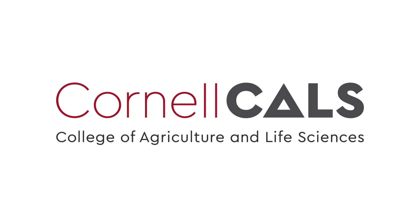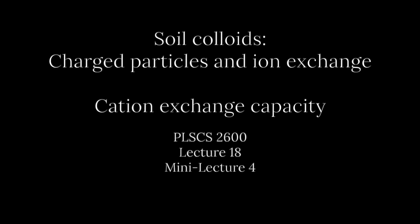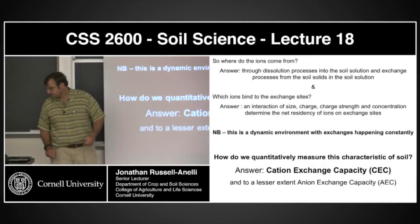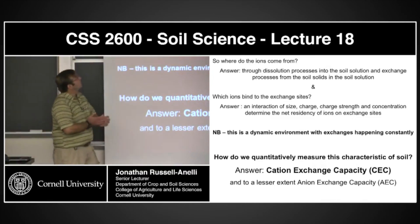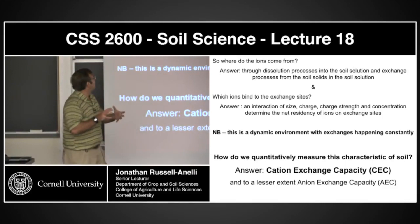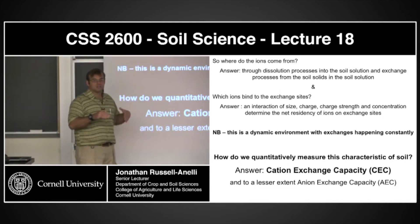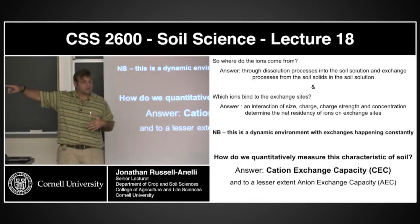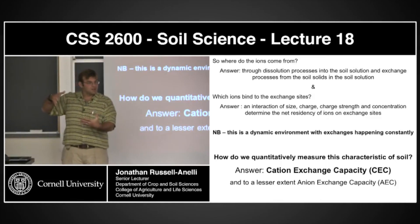At this point, we have a fairly good idea about where these ions come from, and we have a somewhat good idea about how these ions actually bond to the exchange sites. We have electrostatic charges and the rules that control that. We have ligand bonds, and then we have sort of the chelation — an expanded ligand bond.